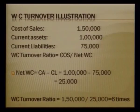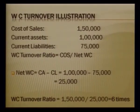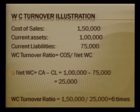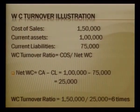For the illustration: cost of sales is one lakh fifty thousand, current assets are one lakh, current liabilities are seventy-five thousand. Working capital equals one lakh minus seventy-five thousand, which is twenty-five thousand. Since opening and closing figures are not separately defined, we use this working capital directly. Working capital turnover ratio equals one lakh fifty thousand divided by twenty-five thousand, giving six times.